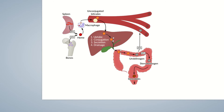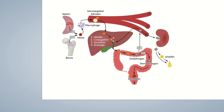The remaining 20% of urobilinogen is reabsorbed from the intestine and transported via the blood to the liver. Because urobilinogen is water-soluble, it can be re-excreted in bile. This creates a circulatory process known as enterohepatic circulation. Reabsorbed urobilinogen can also be excreted by the kidneys. The term urobilinogen originates from the finding of small detectable amounts in urine. Non-enzymatic oxidation of urobilinogen leads to its conversion to urobilin, which is responsible for the yellow characteristic color of urine.